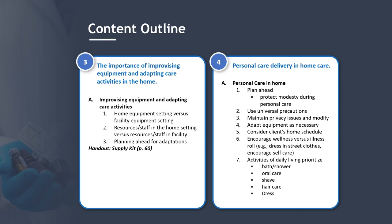Section 3: The Importance of Improvising Equipment and Adapting Care Activities in the Home. Topics include home equipment setting versus facility equipment setting, resources and staff in the home setting versus resources and staff in facilities, and planning ahead for adaptations. A handout supply kit is referenced.